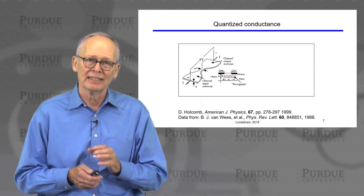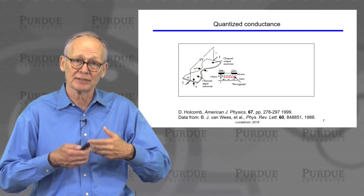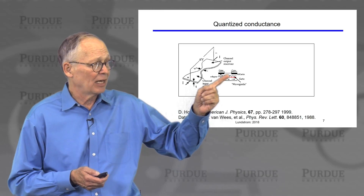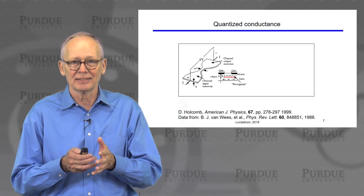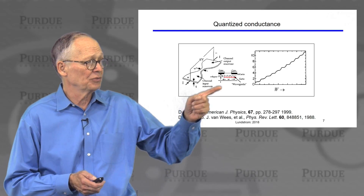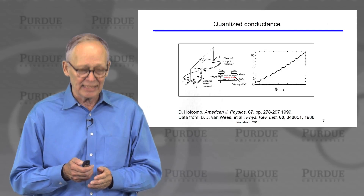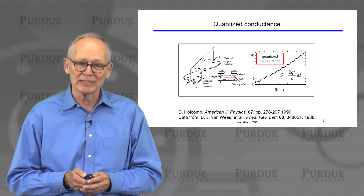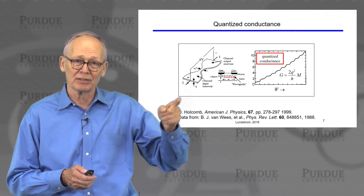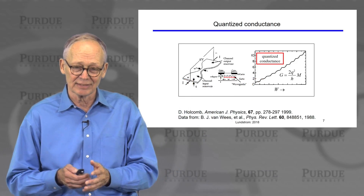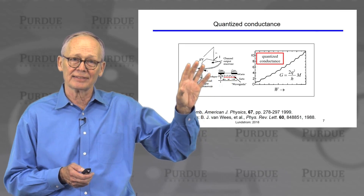We expect the number of channels to be proportional to the width — the wider it is, the more lanes there are for current flow — and we can electrically vary the number of channels. Classically you'd expect conductance to be proportional to width, but the measurement shows something different: the conductance increases as width increases, but not smoothly or linearly. It increases in discrete steps of 2q²/h, so we have one channel, then two, then three, then four channels.